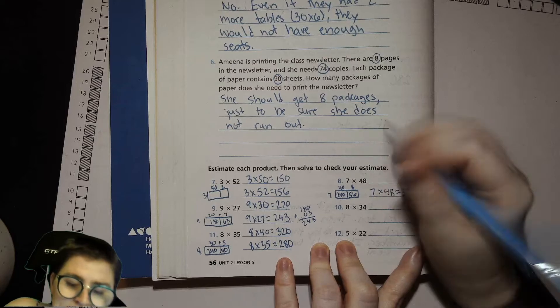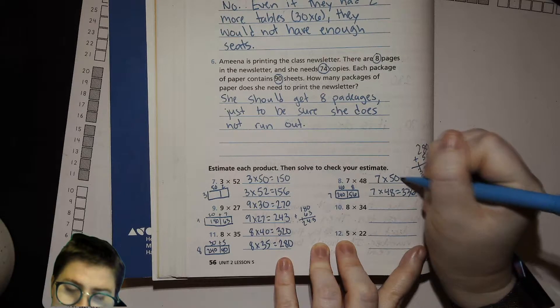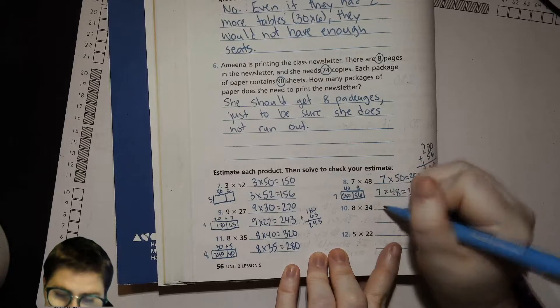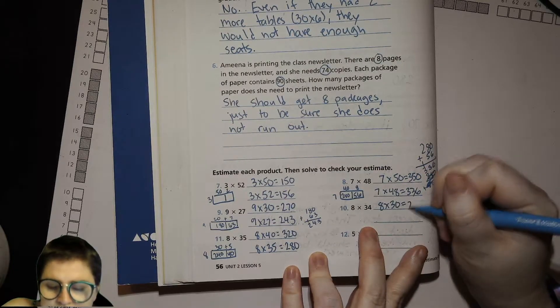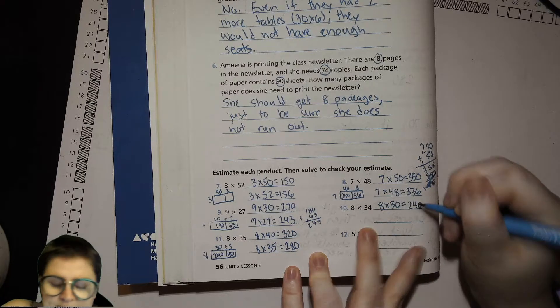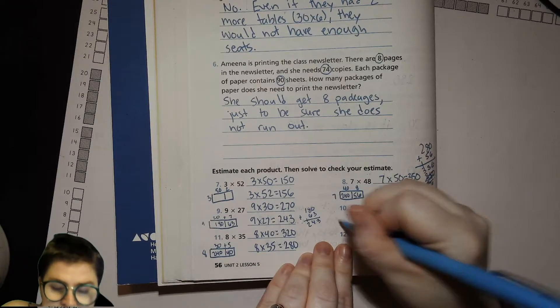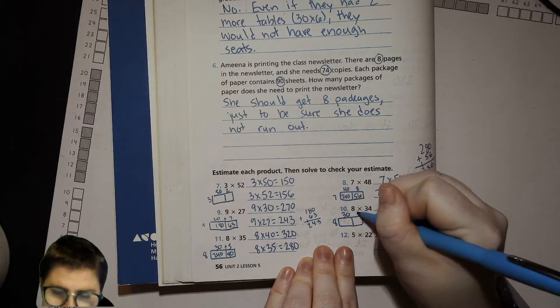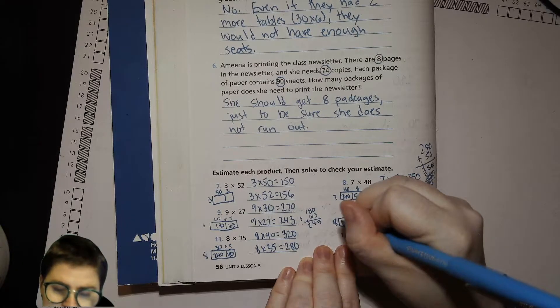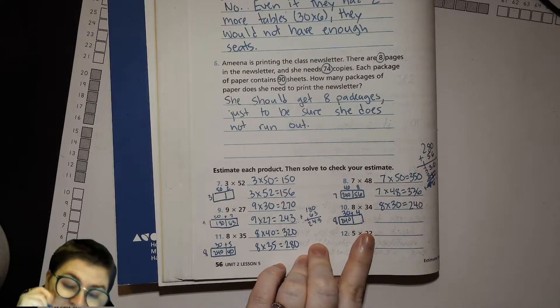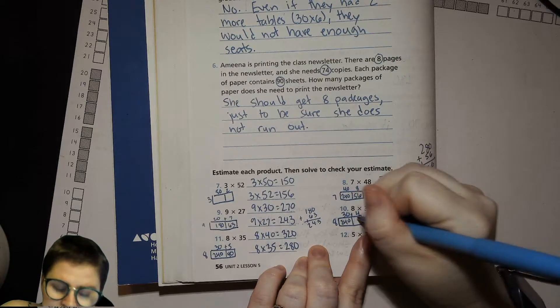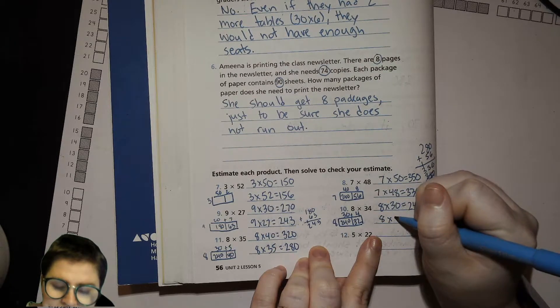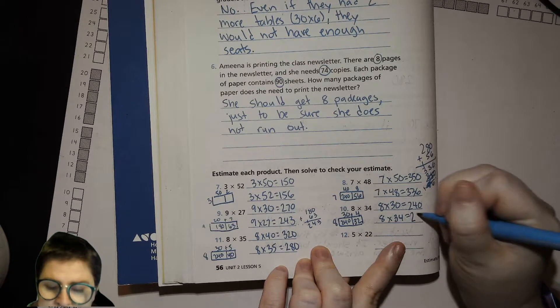Our estimated answer, 7 times 50, would be like 350, right? Okay. 8 times 30 would be 240. 240. And then adding 8 times, I'll put it in a box. I really like this box method. I didn't learn it as a kid. And I think it's super cool. All right. So that's 240. And then 8 times 4 is 32. And then adding those together, 8 times 34 equals 272.